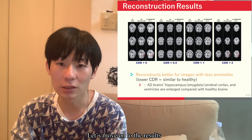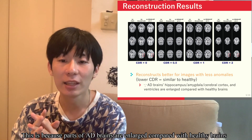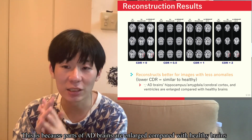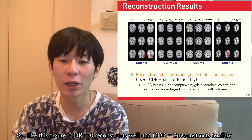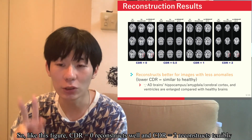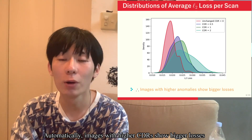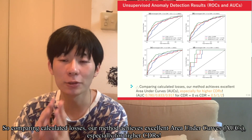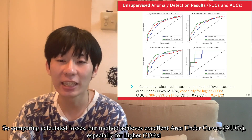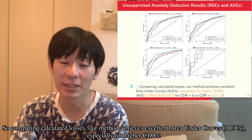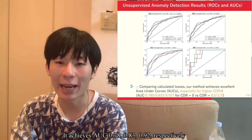Let's move on to the results. Reconstruction succeeds only when given images contain fewer anomalies. This is because parts of AD brains are enlarged compared with healthy brains. So as shown in this figure, CDR equals 0 reconstructs well and CDR equals 2 reconstructs terribly. Images with higher CDRs show bigger losses, and comparing the calculated losses, our method achieves excellent area under the curve AUC scores — especially for higher CDRs: AUC 0.74, 0.83, and 0.92 respectively.